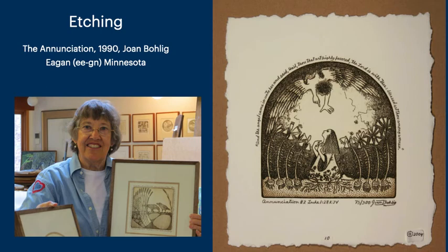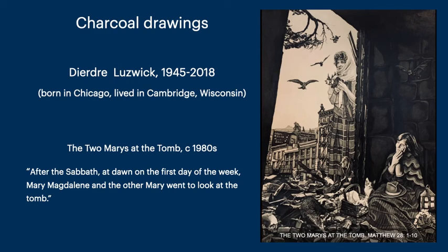From there we go to etchings. This one is the Annunciation, 1990, by Joan Boelig from Egan, Minnesota. She very successfully includes biblical verse with her etchings, and in this piece each flower has a particular symbolism. Charcoal drawings by Deidre Ludwig, 1945 to 2018 — she did all her work in charcoal. This is Two Marys at the Tomb, from the biblical verse: 'After the Sabbath, at dawn on the first day of the week, Mary Magdalene and the other Mary went to look at the tomb.' Was this Mary the Virgin, Mother Mary? We don't know. This is the only charcoal drawing that Deidre did of this particular theme.